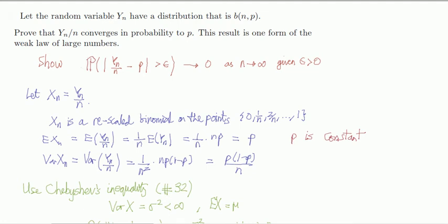There's more than one way of showing that some random variable converges in probability to something, and in this example, Chebyshev's inequality solves this problem pretty neatly.